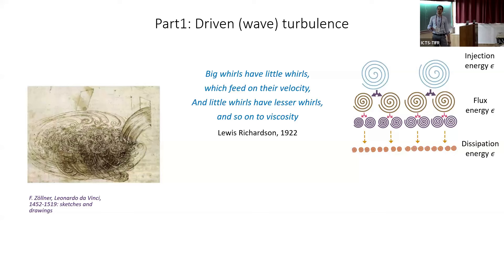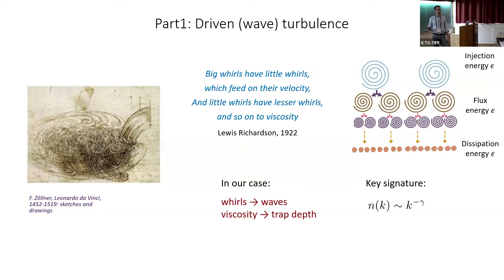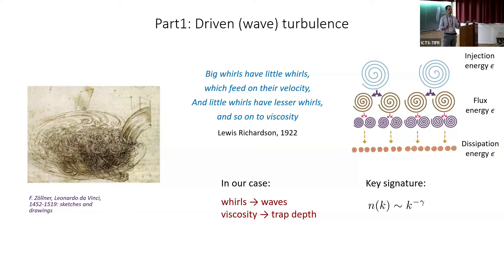I don't need to introduce turbulence here, but I'd like to make two remarks. First, we are studying wave turbulence, and in 2D there exists a direct energy cascade — that's what we are going to study. Second, there is no intrinsic viscosity in our atomic system, but we have a trap depth: if an atom is more energetic than the trap depth it leaves the trap, which sets the viscosity scale. The key signature of fully developed turbulence is a power-law momentum distribution.